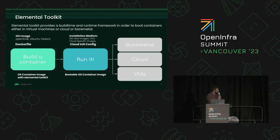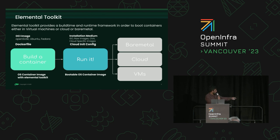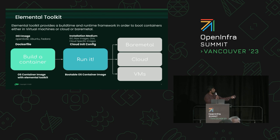The first step is building a container image based on a Linux distro. Almost every Linux distro provides a base OS container — like OpenSUSE, Ubuntu, or Fedora. We add Elemental Toolkit to this Dockerfile alongside the base Linux distro image, build it, and the result is an OS container image with Elemental Toolkit inside. You can add many more packages — it's essentially your Dockerfile.